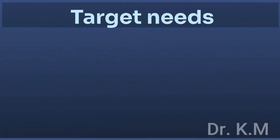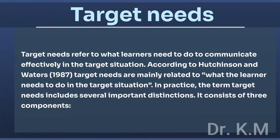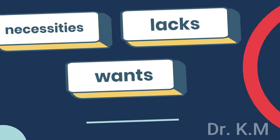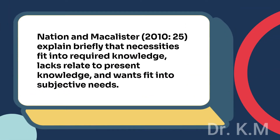Target needs refer to what learners need to do to communicate effectively in the target situation. According to Hutchinson and Waters (1987), target needs are mainly related to what the learner needs to do in the target situation. In practice, the term target needs includes several important distinctions — it consists of three components: necessities, lacks, and wants. Nation and McAllister (2010, p. 25) explain briefly that necessities fit into required knowledge, lacks relate to present knowledge, and wants fit into subjective needs.